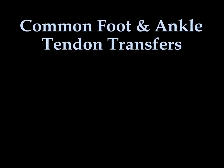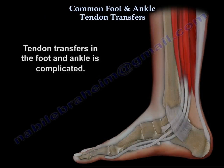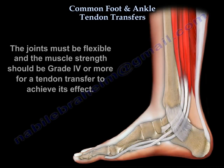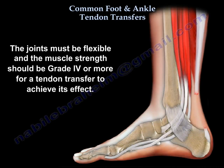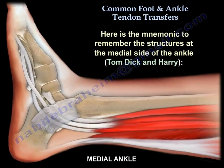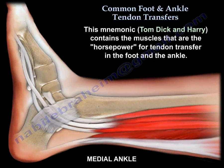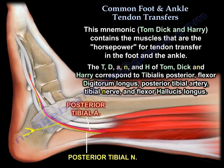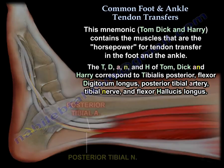Common foot and ankle tendon transfers. Tendon transfers in the foot and ankle are complicated. The joints must be flexible and the muscle strength should be grade four or more for a tendon transfer to achieve its effect. Here is the mnemonic to remember the structures at the medial side of the ankle: Tom, Dick, and Harry. This mnemonic contains the muscles that are the horsepower for tendon transfer in the foot and ankle.